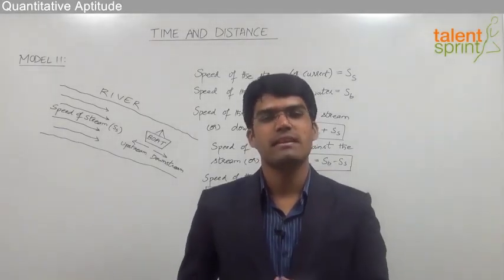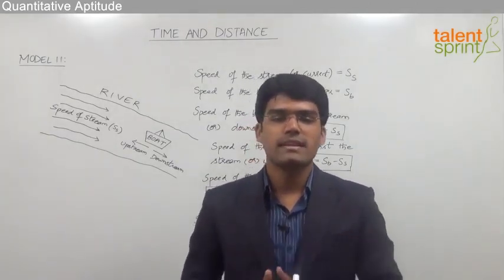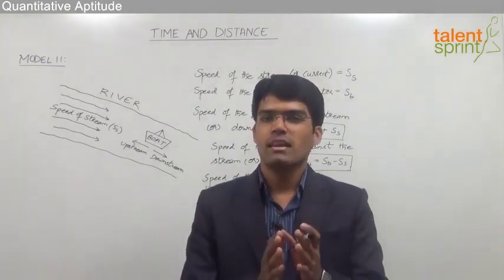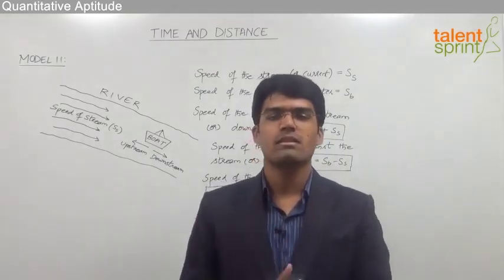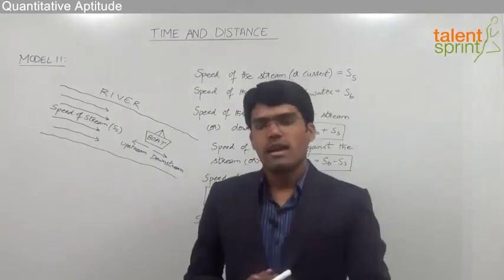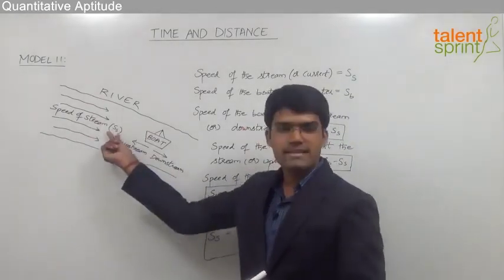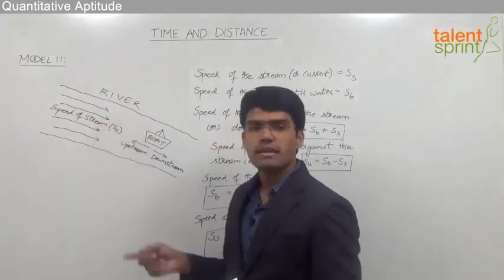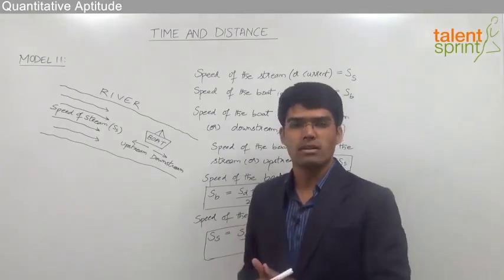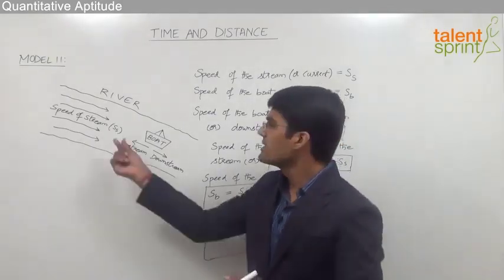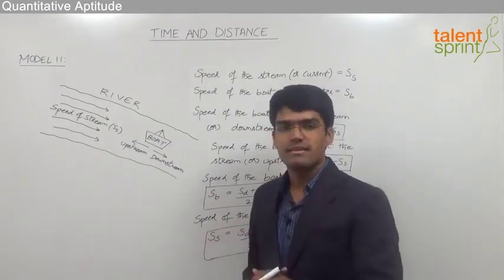Let us now take the next model from time and distance, which is based on boats and streams. In this particular case we have a stream — nothing but a flowing river — in which a boat has to cover a certain distance. As you can see, we have a river flowing at a certain speed, that is ss, which is nothing but the speed of the stream or the speed of the current. A stream or current is nothing but flowing water, and whenever water is flowing it has some speed, taken as ss.